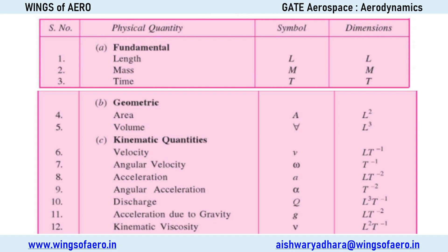Kinematic quantities represent something related to velocities, acceleration, discharge, and kinematic viscosity. You should know the set of kinematic quantities. Since you know the unit of velocity, it will be very easy for you to find out the dimension for each respective quantity. If you know the unit, you can directly use it to find the dimension — this saves time in competitive exams.